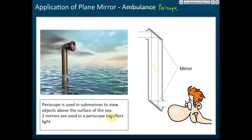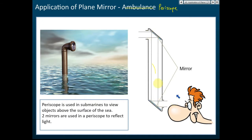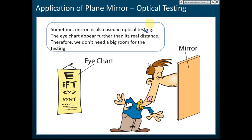The periscope is another application of plane mirrors, commonly used in submarines to view objects above the sea surface. It uses two plane mirrors, each placed at 45 degrees. Light hits the top mirror, reflects downward at 90 degrees, hits the second mirror, and travels to the eye. Importantly, the image formed is upright — if A is above B at the top, the observer sees A above B.